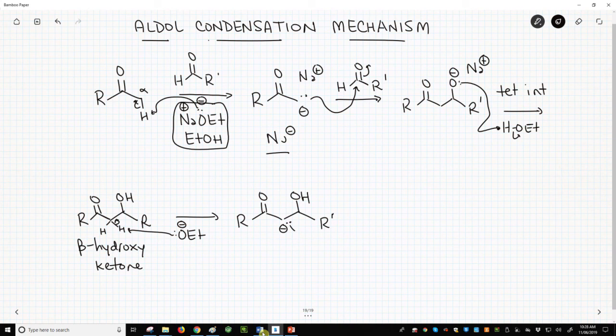The enolate electrons lean over, kick out hydroxide as a leaving group, and that forms our final alpha-beta unsaturated ketone. Wow, this is so much easier than the same ultimate molecule through the aldol reaction and a dehydration.